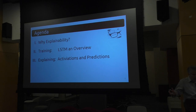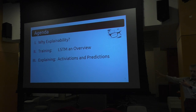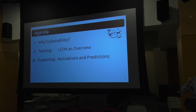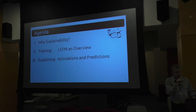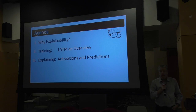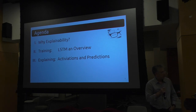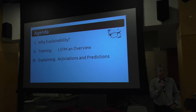Two, training long short-term models. The main goal is to build an intuition of what is going on inside of these models, with an eye on — if we're going to explain it, what are some of the key pieces we need to have an intuition about? Three, we'll shift gears into explainability. The bulk of that is going to be around a very cool tool called LSTM-Viz, which is out of Harvard's NLLP Lab.